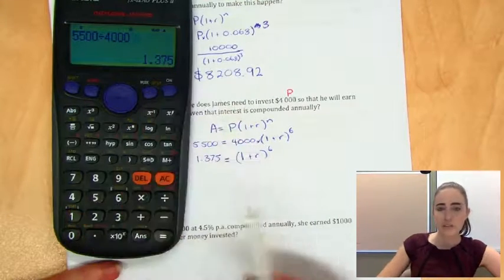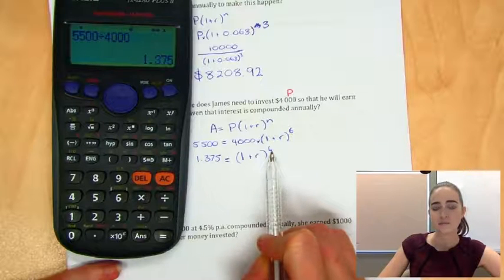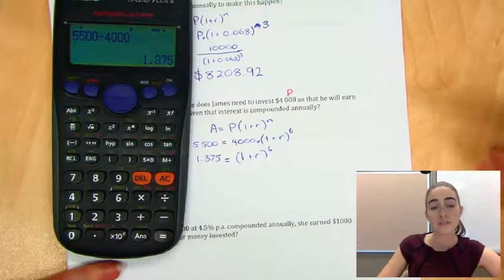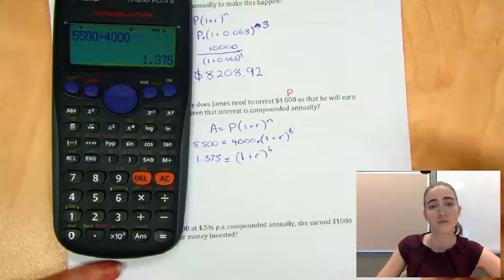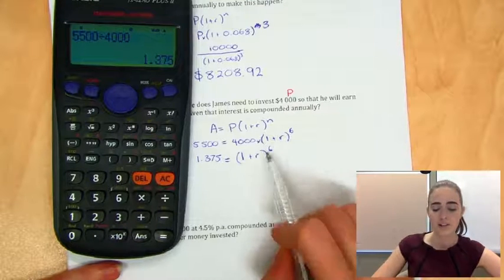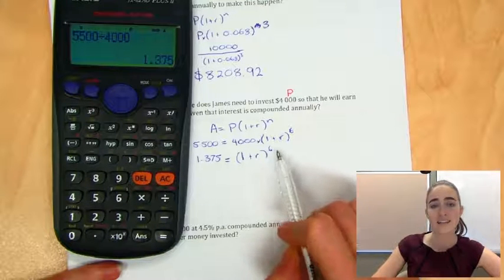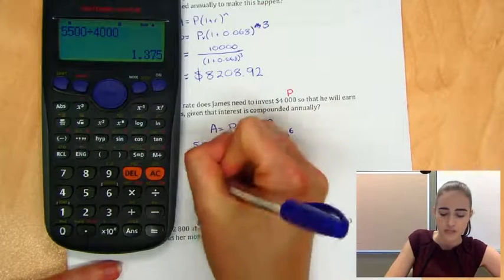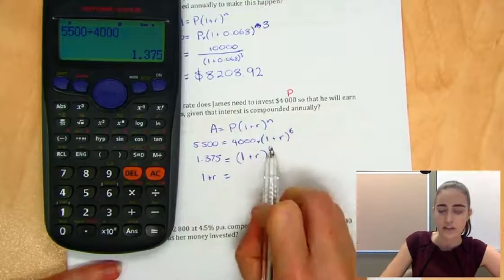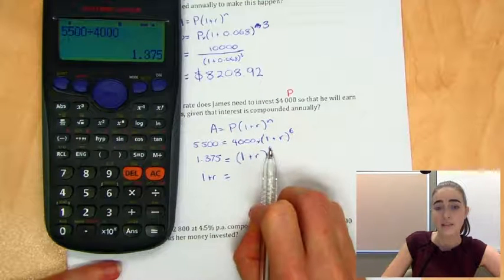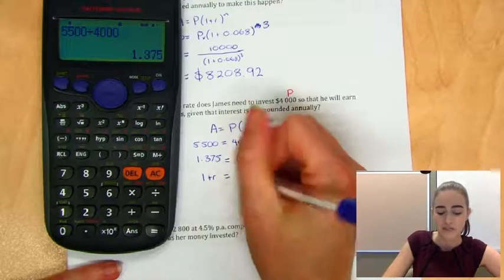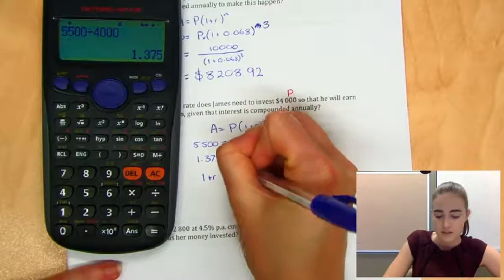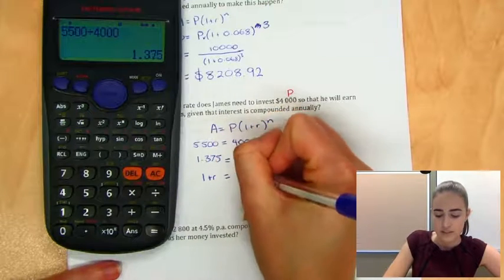All right. The next thing we want to get rid of is this to the power of six. So just like the opposite of squaring something is taking the square root, the opposite of putting something to the power of six is to take the sixth root. So I'm just going to flip this over as I write it as well. To get that one plus R on its own, so to get rid of that power of six, we're going to take the sixth root of that. It's going to look like a square root sign with a little six above it.